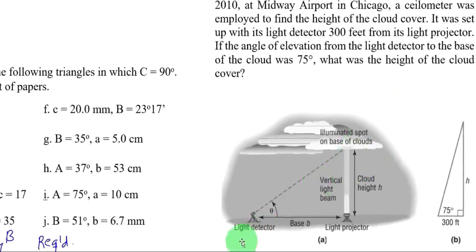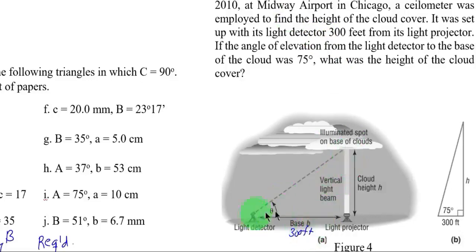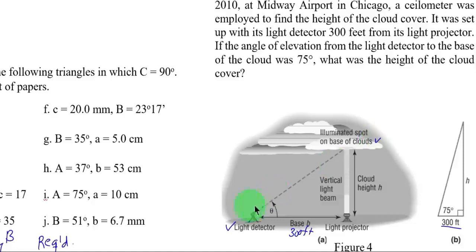So the given is: this is the light detector and this is the light projector. The given distance between the light detector and light projector is 300 feet. Drawing the equivalent triangle for this situation, we have 300 feet as the base. The angle of elevation from the light detector to the base of the cloud is 75 degrees. The unknown here is the height of the cloud, which we denote as H.